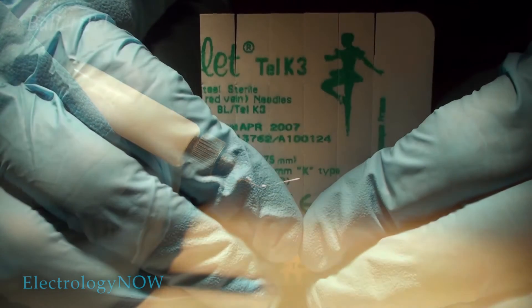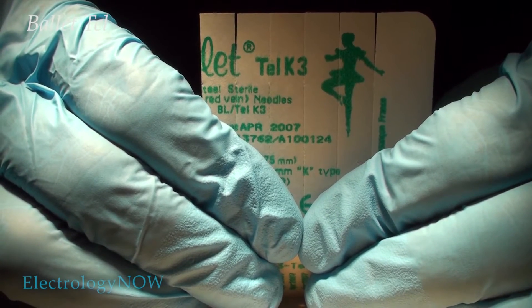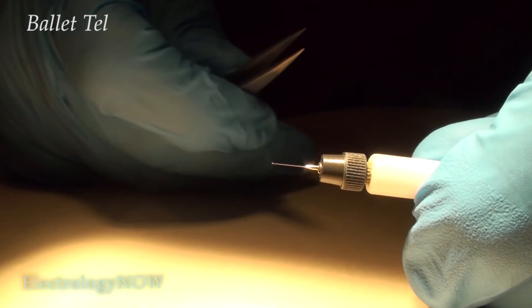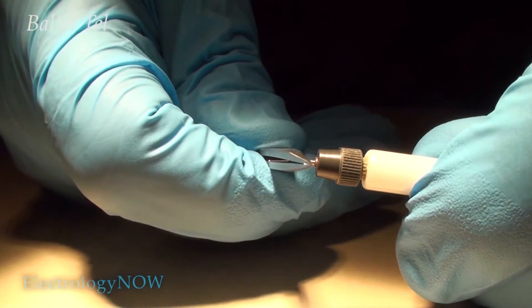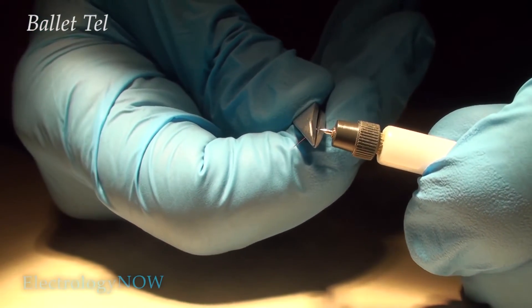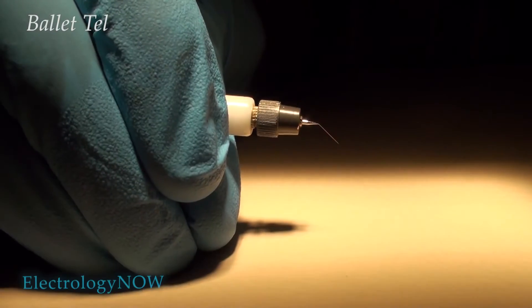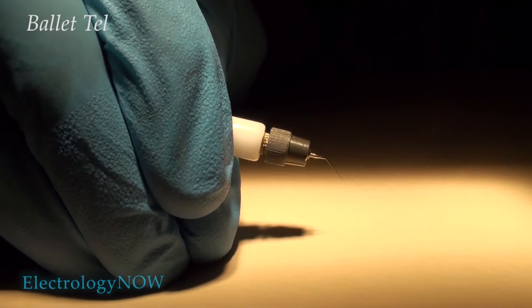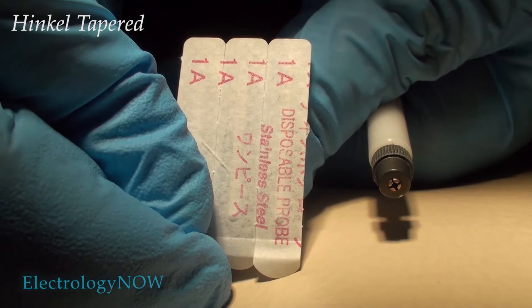These are your Ballet Tell K-3 needles that were specifically designed for removing telangiectasia. The Ballet Tell needle also cannot be bent in the shank, but it's fine because you're only going to be using the tip of the needle. Here's the proper positioning for your Ballet Tell needle, and you're going to be using it like this most of the time.